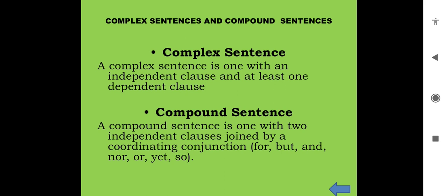Complex and compound sentences: A complex sentence consists of one independent clause and at least one dependent clause, whereas a compound sentence consists of two independent clauses joined by a coordinating conjunction: for, but, and, nor, or, yet, so.